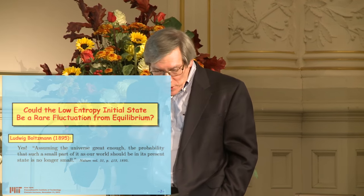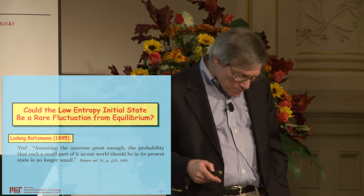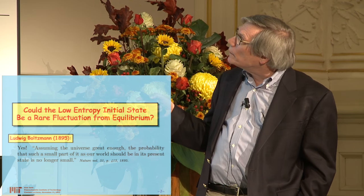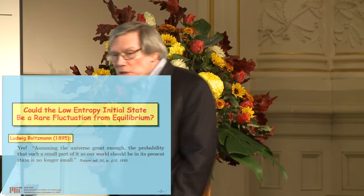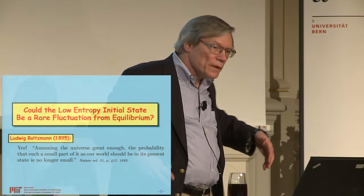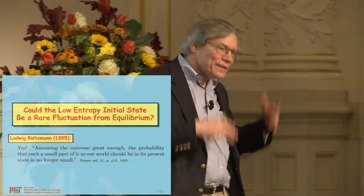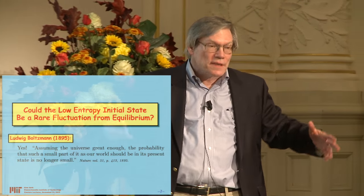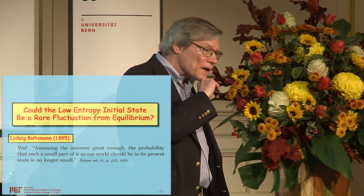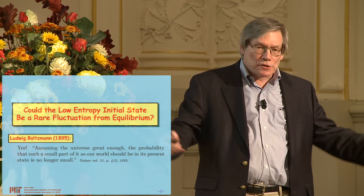One possible answer — considered way back when, proving that this subject is more than 100 years old — is Ludwig Boltzmann himself, who considered the question of whether the low entropy initial state could just be a rare fluctuation from equilibrium. Is it possible that the world that we see is really part of a very large world which is actually in thermal equilibrium? In thermal equilibrium there are fluctuations, and big fluctuations happen rarely, but essentially anything can happen. So Boltzmann asked himself: is it possible that all the world around us, everything we see, is just a fluctuation from a state which is actually in thermal equilibrium?